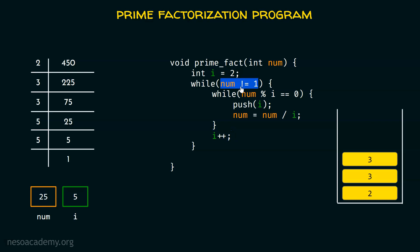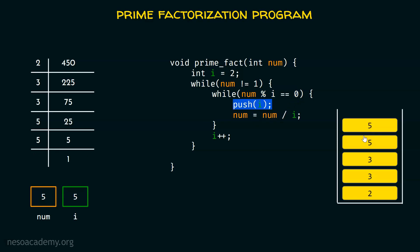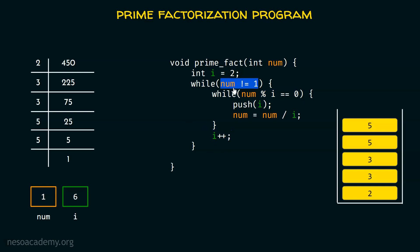i becomes 5. We check: is num not equal to 1? Yes, so we continue. Is num mod i equal to 0? Yes — num mod 5 is equal to 0 — so we get inside the inner while loop and push 5 onto the stack, then update num to 5. We check again: num mod 5 is still 0, so we push 5 again and update num to 1. Now, 1 mod 5 is not equal to 0, so we exit the inner while loop and increment i. We then check the outer condition: num is equal to 1, so we exit the outer while loop. Execution is done.